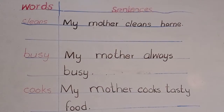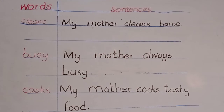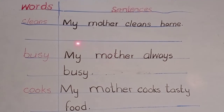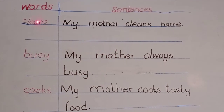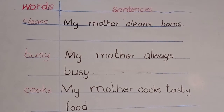Now children, take out your copies. Take out your English copies and make the columns. In the first column you will write the words, and in another column you will write the sentences.